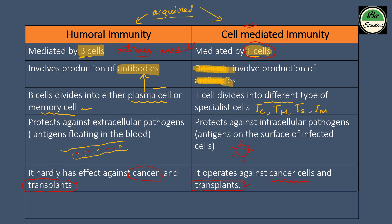Humoral immunity hardly has an effect against cancer and transplants. But cell-mediated immunity is very important — it operates against cancerous cells and transplants.